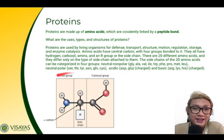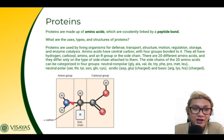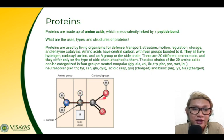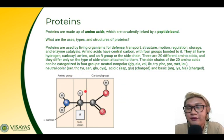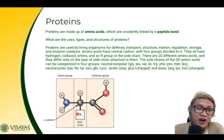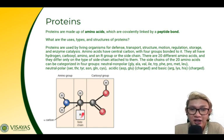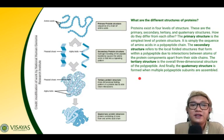Amino acids, as the building blocks of proteins, have a centrally located carbon with four groups bonded to it: hydrogen, a carboxyl group, an amino group, and an R group (side chain). All amino acids in living organisms share these same groups and differ only in their R chain or side chain.